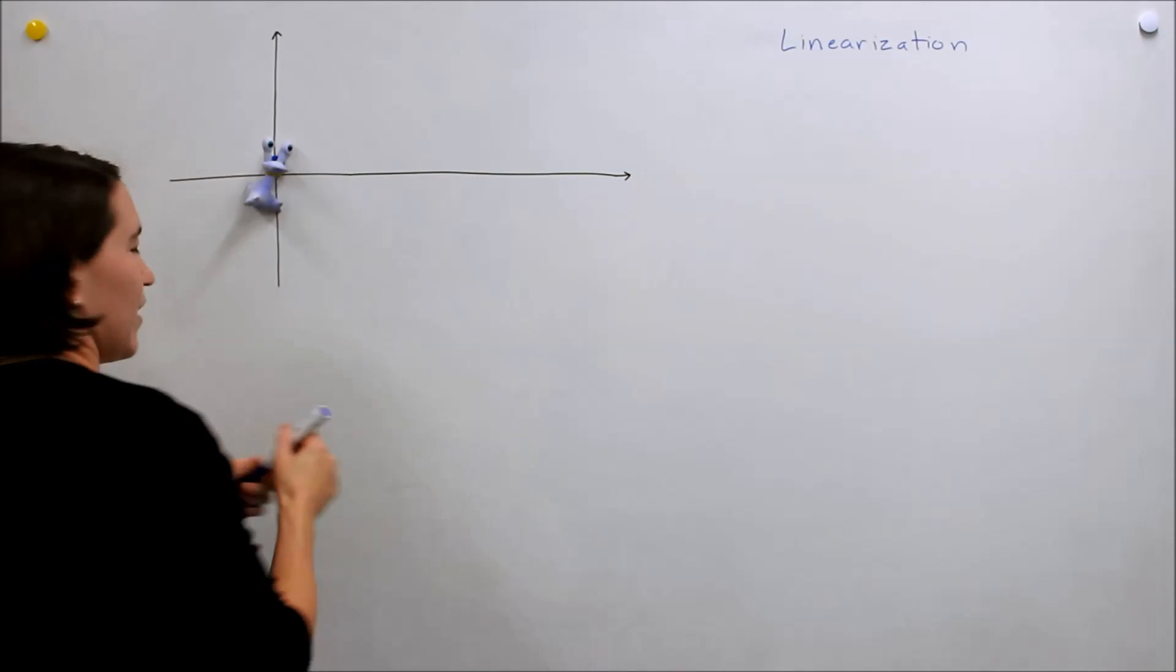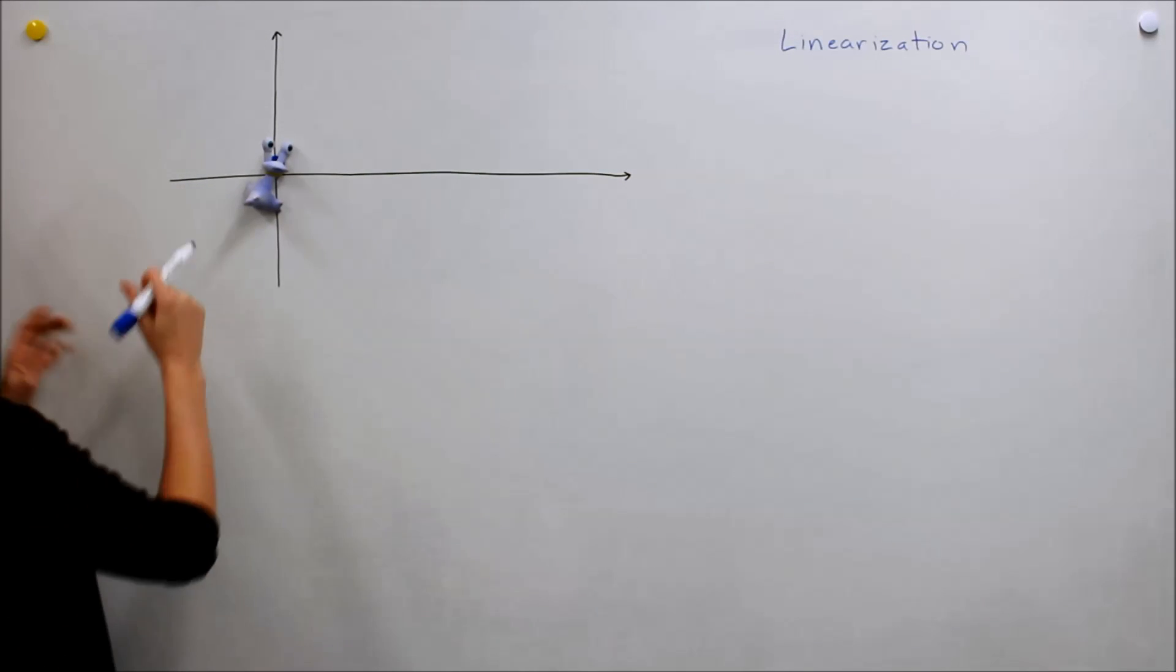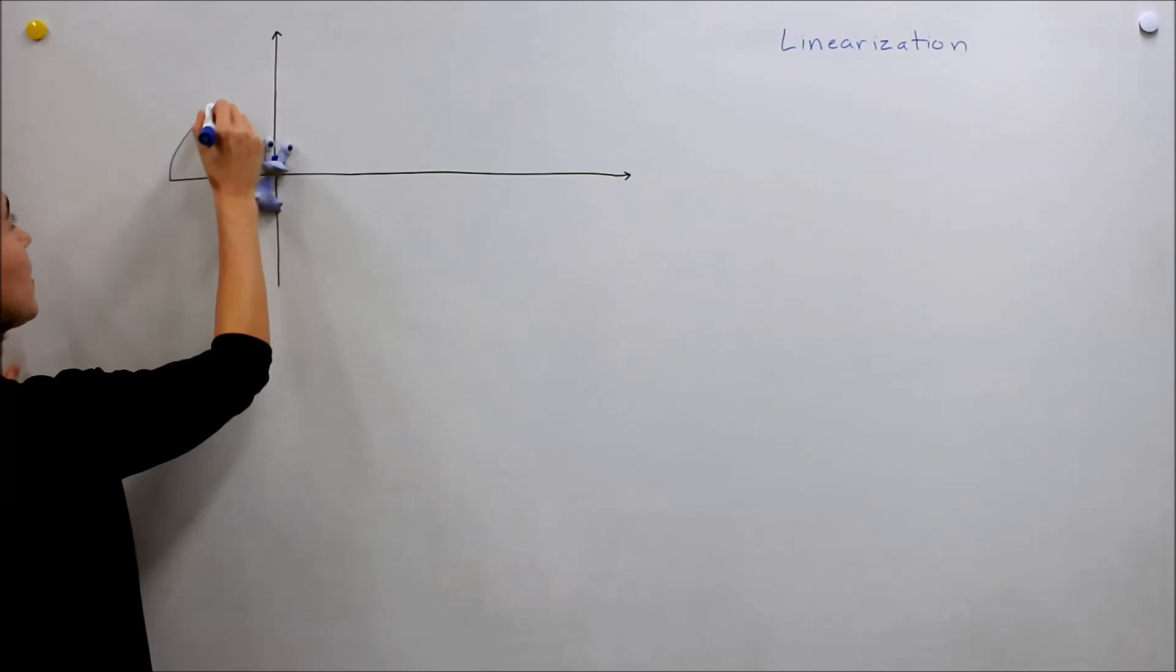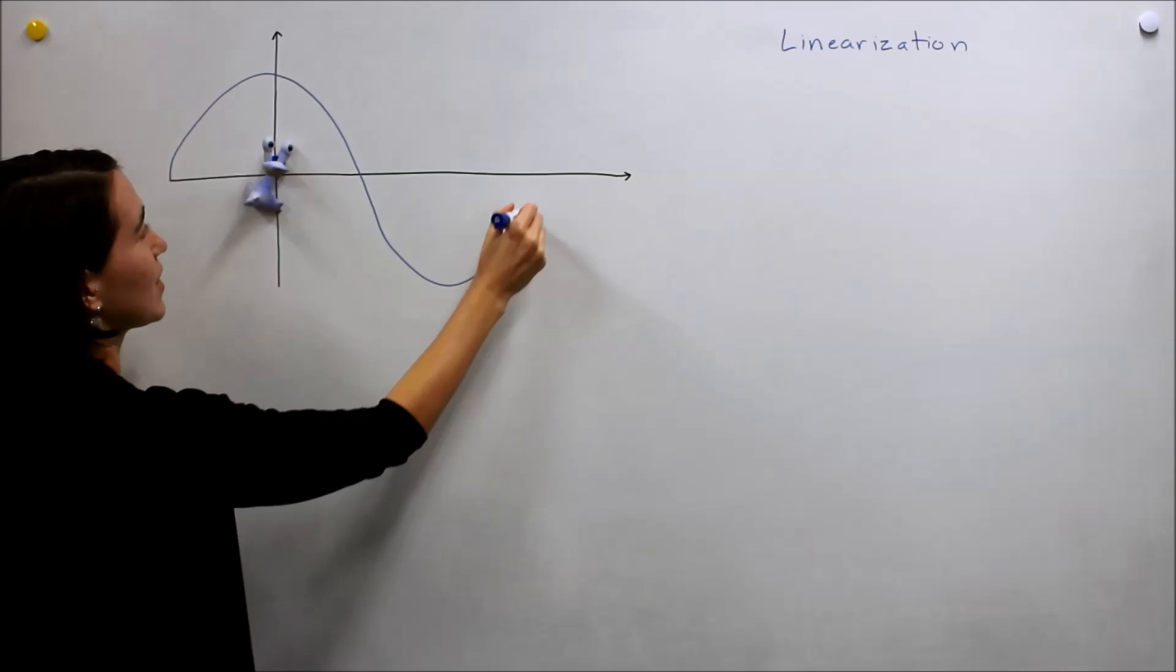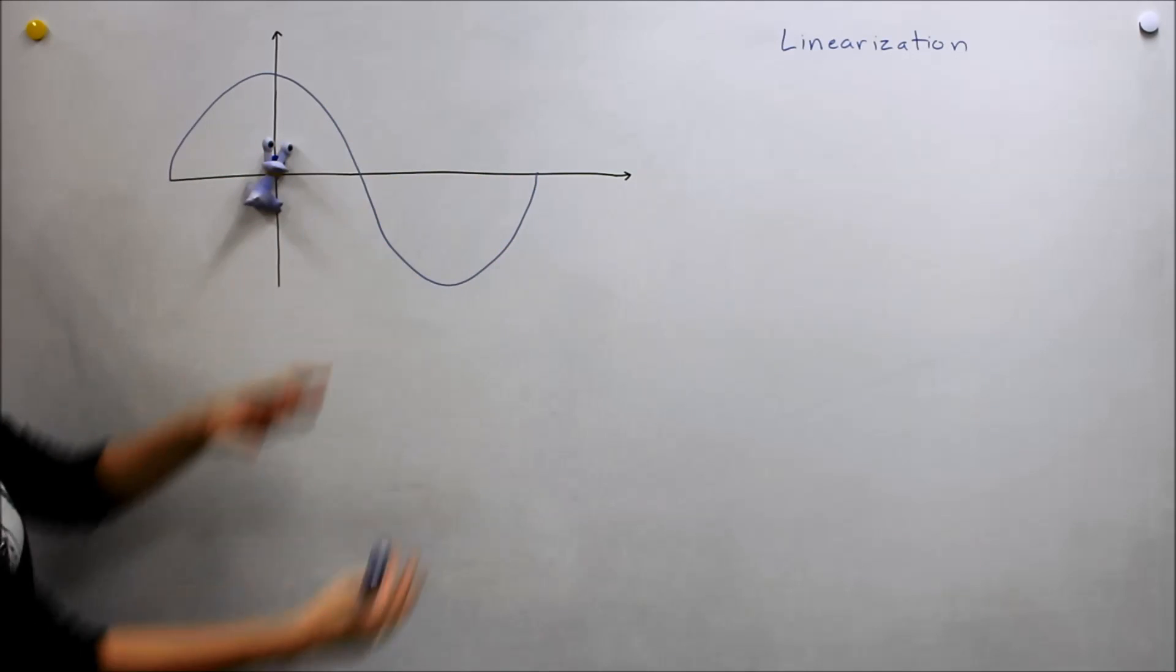And the car, to avoid hitting her, swerves all the way around and then has a corrected trajectory and goes back like that.